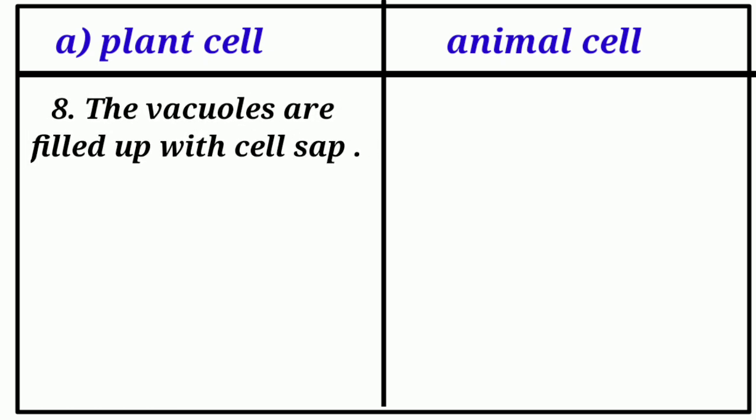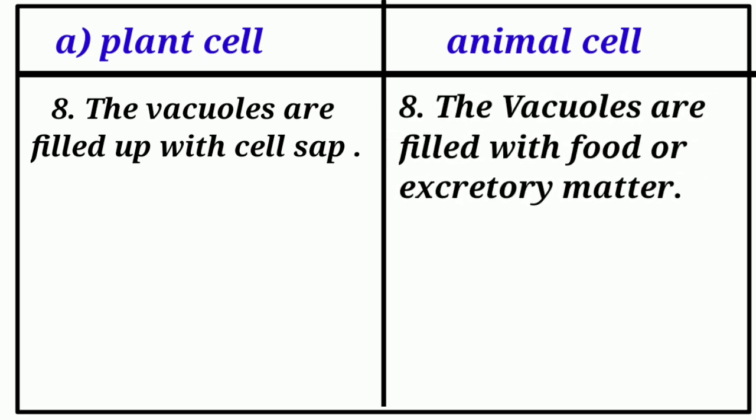Plant cells: The vacuoles are filled with the cell sap. Animal cells: The vacuoles are filled with food or excretory matter.